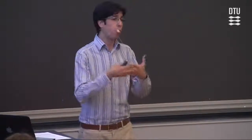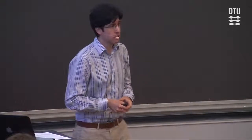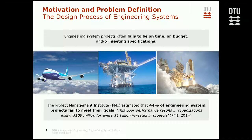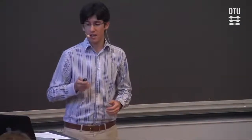To introduce this, we start with why we are looking at this topic — the motivation and research approach. A key issue that motivated this research is that engineering system projects often fail to be on time, on budget, and meeting specifications, even when there are plenty of resources available and great engineering teams. This happens with things like the design of airplanes, large energy projects, and many other types of projects. Large amounts of resources are wasted — the PMI, the Project Management Institute, estimates that 44% of engineering system projects fail to meet their goals, translating into around 10% of resources wasted.